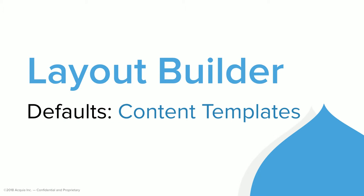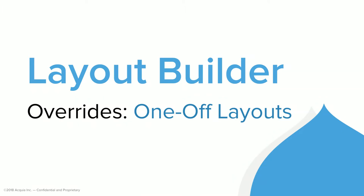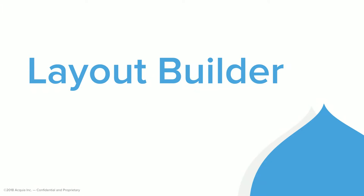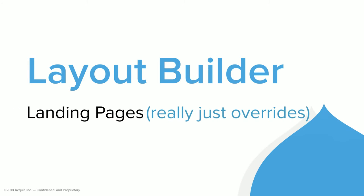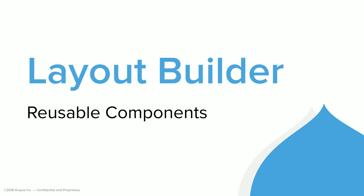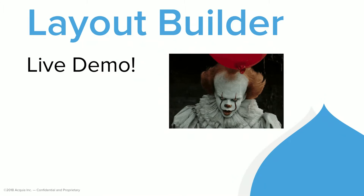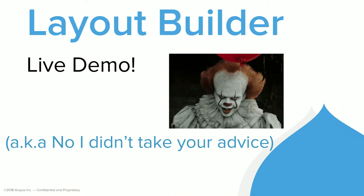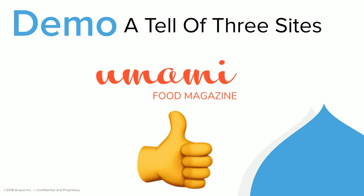Layout Builder does content templates - it basically replaces managed display for all articles. It does one-off layouts, meaning you want this one article to look different. It does landing pages, basically overrides done a certain way, where I want a blank page and start adding stuff. It does reusable components - if you're familiar with mini panels, you can use Layout Builder to do that. So let's get started with the live demo - if you gave me advice not to do a live demo, I didn't listen to you, sorry.